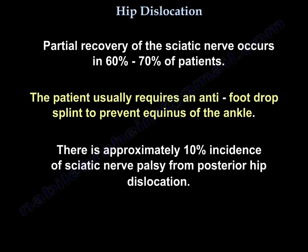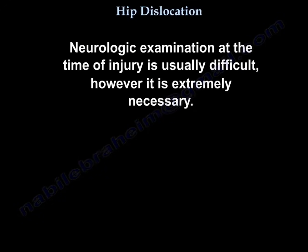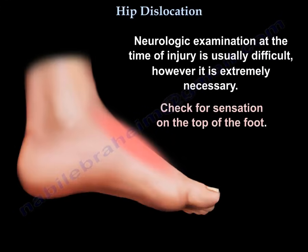The length of time a hip remains dislocated influences the incidence and severity of sciatic nerve injury. Partial recovery of the sciatic nerve occurs in 60–70% of patients, who usually require an anti-foot drop splint to prevent contracture of the ankle. There is approximately 10% incidence of sciatic nerve palsy from posterior hip dislocation. Neurologic examination at the time of injury is usually difficult but is extremely necessary — check for sensation on the top of the foot.